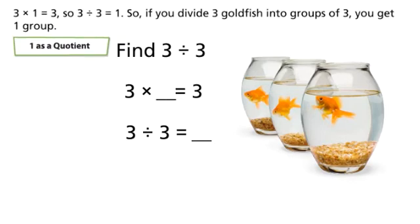3×1 equals 3, so 3÷3 equals 1. So if you divide three goldfish into groups of three, you get one group.